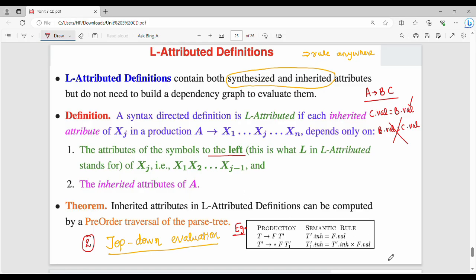Let's analyze this example. Consider the production T → F T'. The attribute value of T' depends on F.value. T' depends on its left sibling F, so this is an inherited attribute, specifically a left inherited attribute.